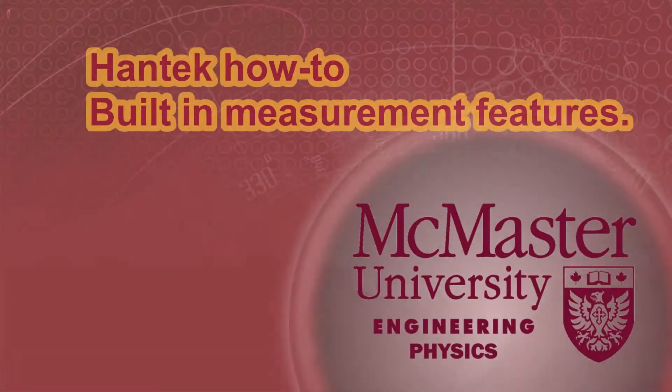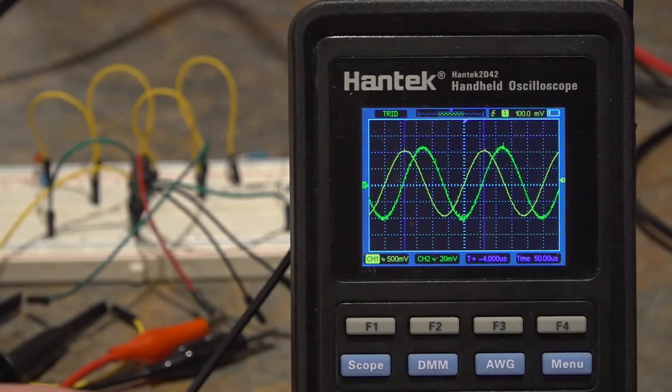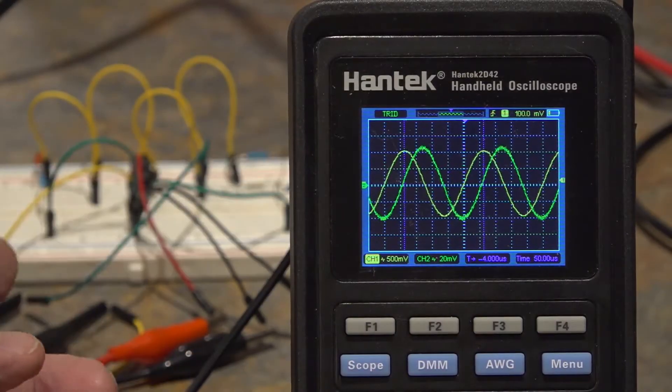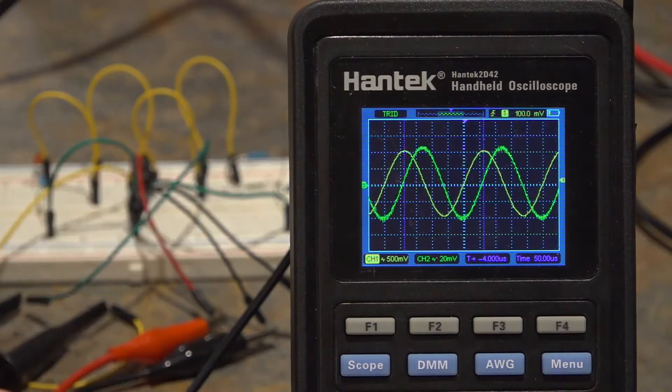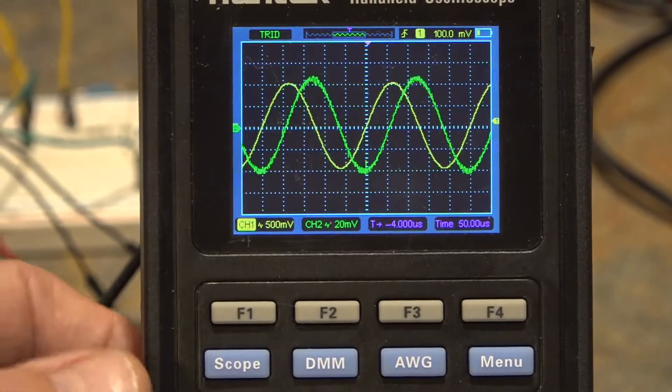Hi everybody, this is a Hantech how-to using the built-in measurement features. With the basic Hantech in scope mode you can see you've got your two channels displayed. Yellow is channel 1, green is channel 2. I'm using lab 2 AC circuit analysis for this example.